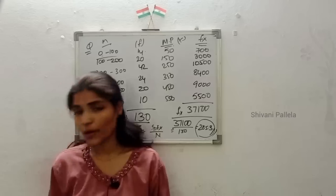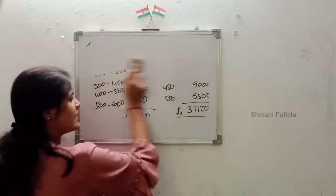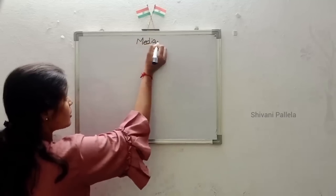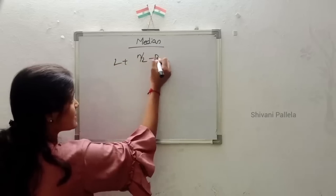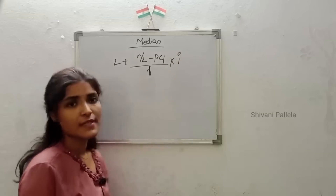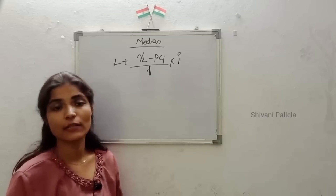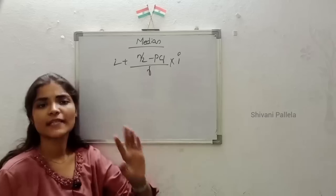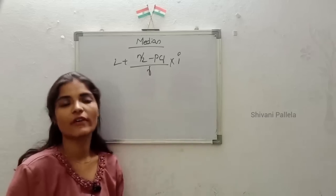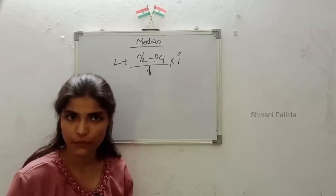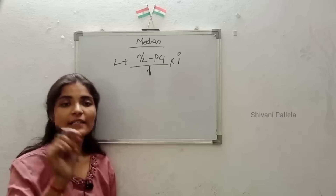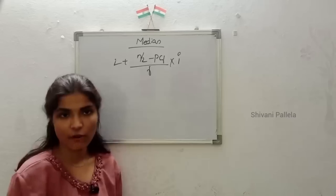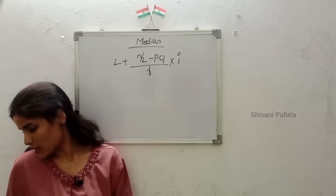Now we will discuss median, which is the most important and very easy topic. The formula of median is: L + [(N/2 − PCF) / F] × i. Sometimes they will also ask for quartiles along with median. I have already explained quartiles in the Bowley's coefficient of skewness video — check that out for quartiles explanation.